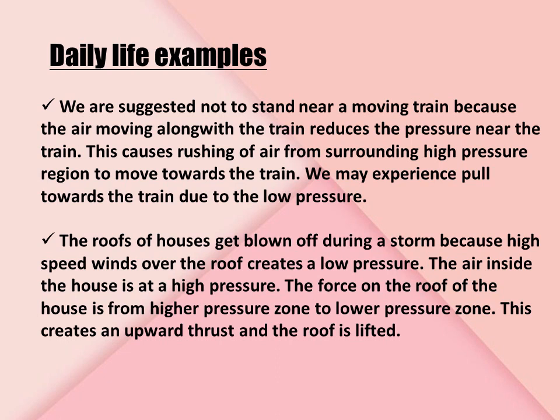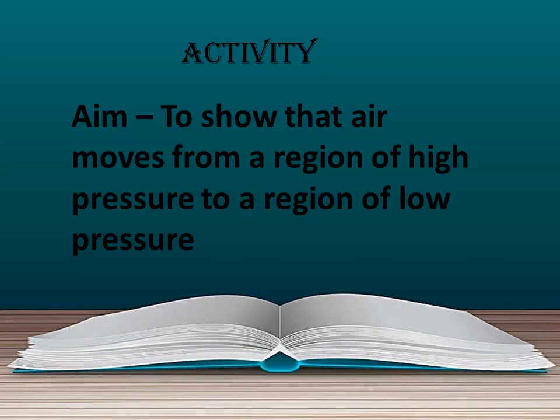Now let us take some daily life examples for this property. We are advised not to stand near a moving train, because the air moving along with the train reduces the pressure near it. This causes air from the surrounding high pressure region to rush towards the train, and we may experience a pull towards it. The roofs of houses get blown off during a storm because high speed winds over the roof create a low pressure region. The air inside the house is at higher pressure, so the force acts upward, creating a thrust that lifts the roof.